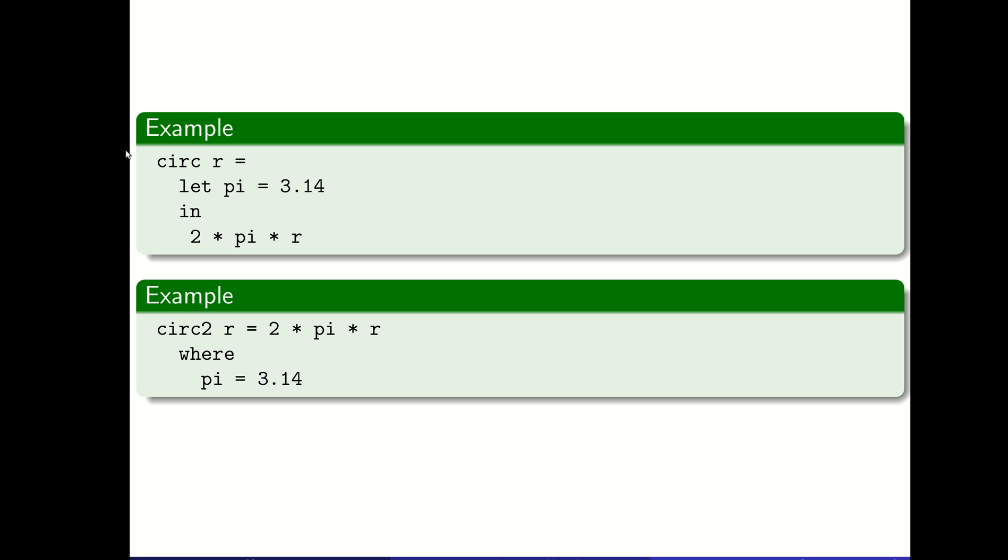Here are two basic examples of writing a circumference function. For circumference of r, we say let pi equal 3.14 in 2 times pi times r. We're defining a local variable up front, then using it in some calculation. Once we know what r is when circumference is called, we'll be able to calculate the circumference using that local variable and the parameter r. The let statement has access to the parameters of the function it was defined in.